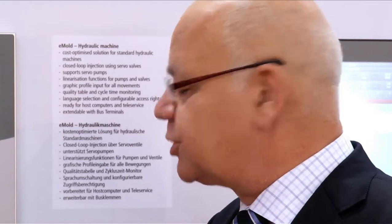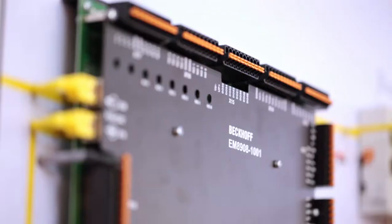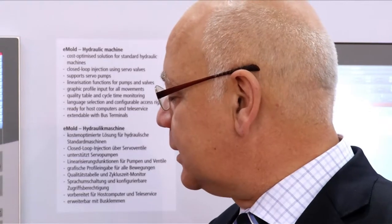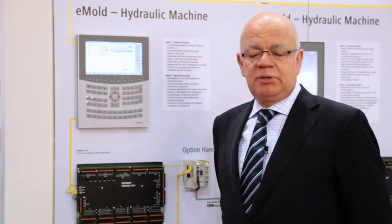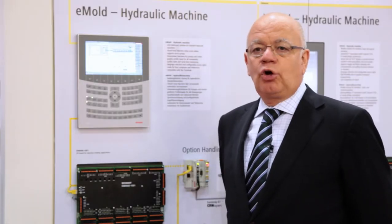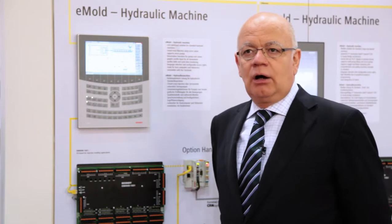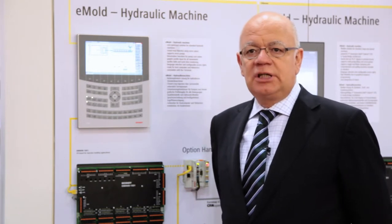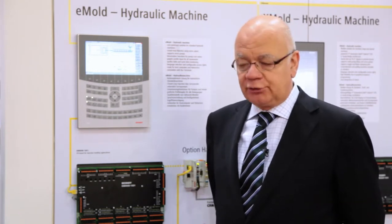The I/O board has all the I/Os needed for a hydraulic machine, mainly digital outputs with two amps — more than 40 — and all the inputs you need for potentiometers, so you can easily connect all the sensors required for a hydraulic machine.